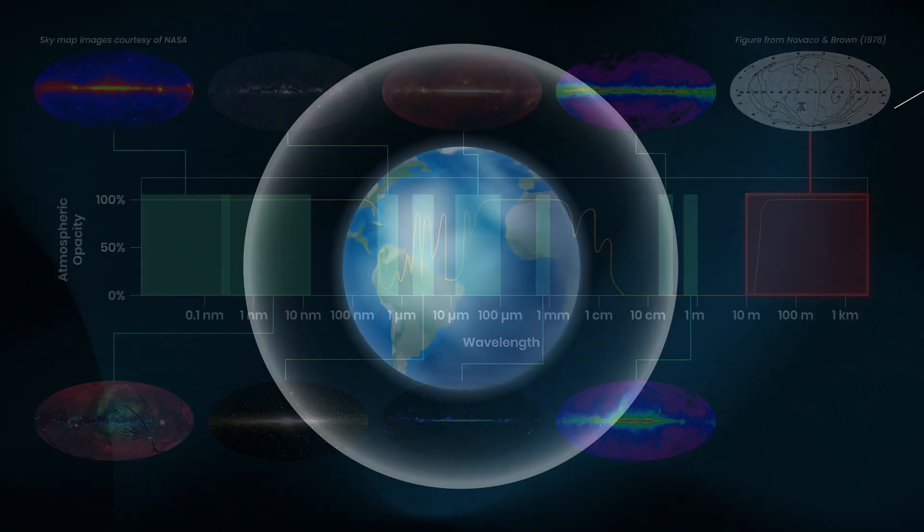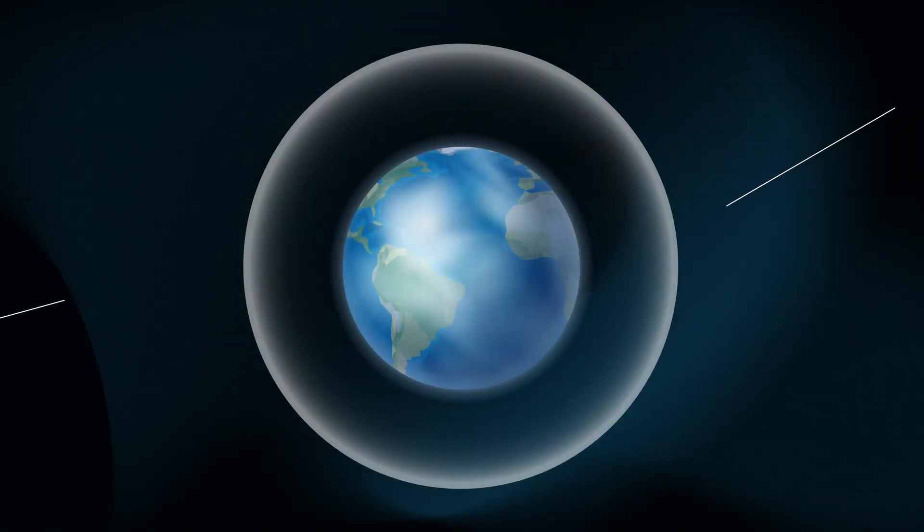At these long wavelengths, Earth's ionosphere doesn't allow radio waves to pass through. So the question is, why haven't we built a space telescope to explore this part of the spectrum?